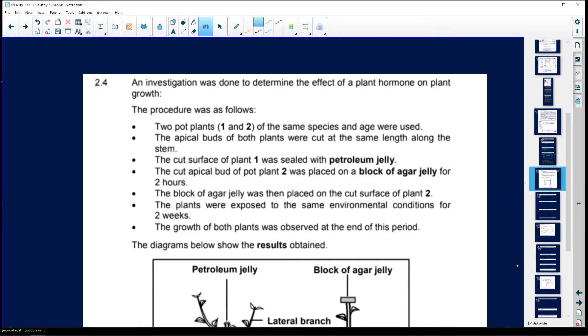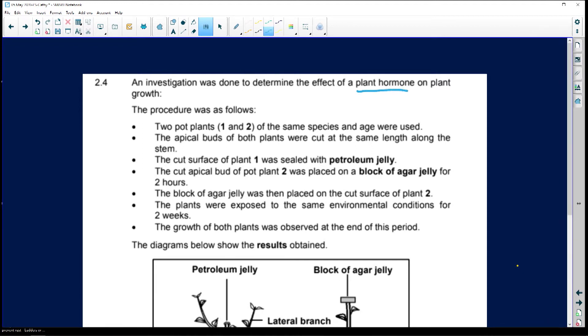Now, an investigation was done to determine the effects of a plant hormone on plant growth. You know that for plant growth it is always auxins. Auxins are a group of plant hormones that cause plants to grow.